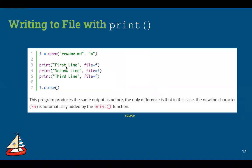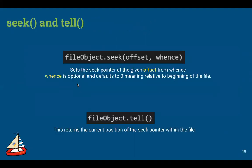You can also use print() to write to a file. Instead of f.write(), do print('text', file=f). One advantage: print automatically adds a newline, so you don't need to include '\n' explicitly.